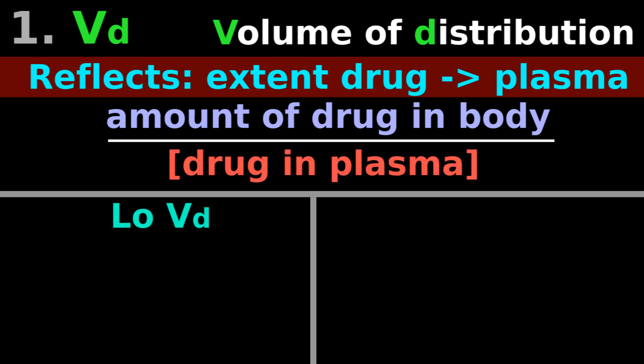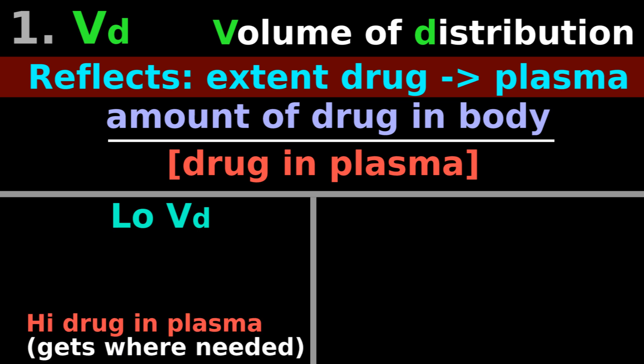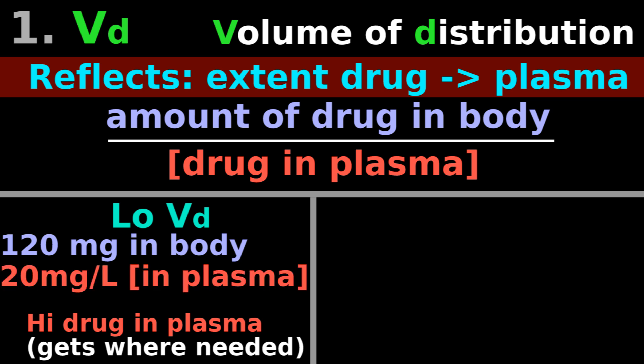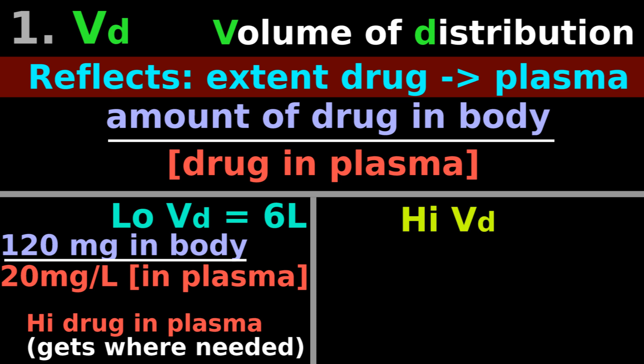A low VD suggests that there is high drug in plasma, so it can flip to where it's needed in the body. If you swallow 120 mg of drug and there is 20 mg per liter of drug in plasma, then your VD is 6 liters.